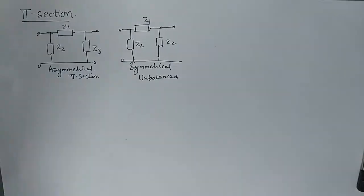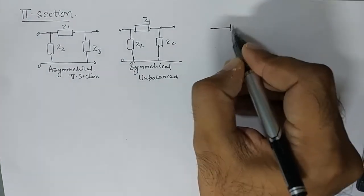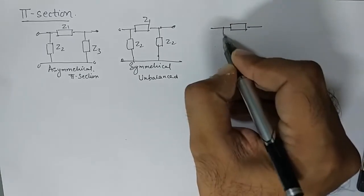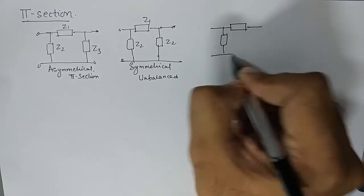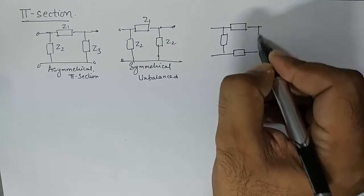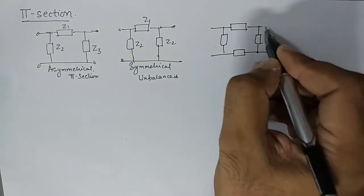So if you wish to convert it to balanced, then we need to put an additional impedance in the other series arm also.